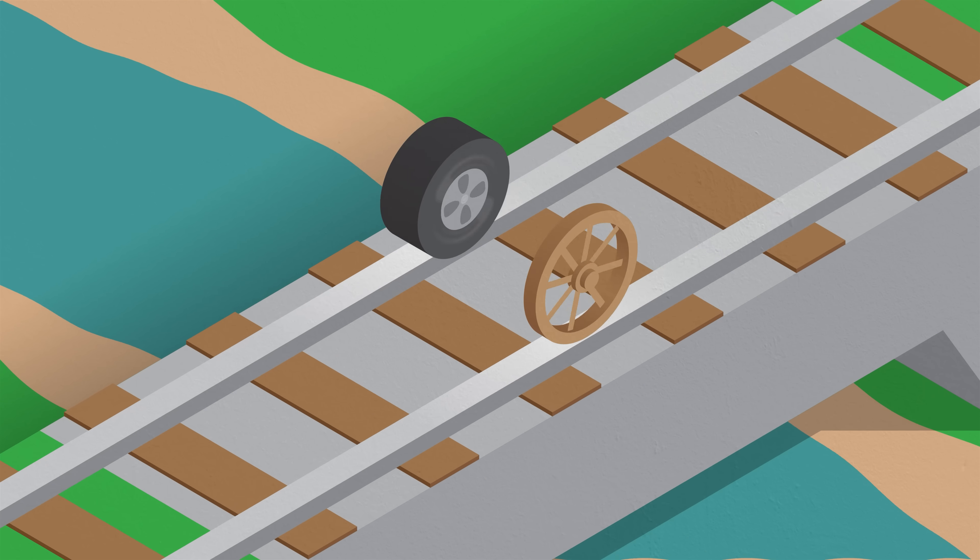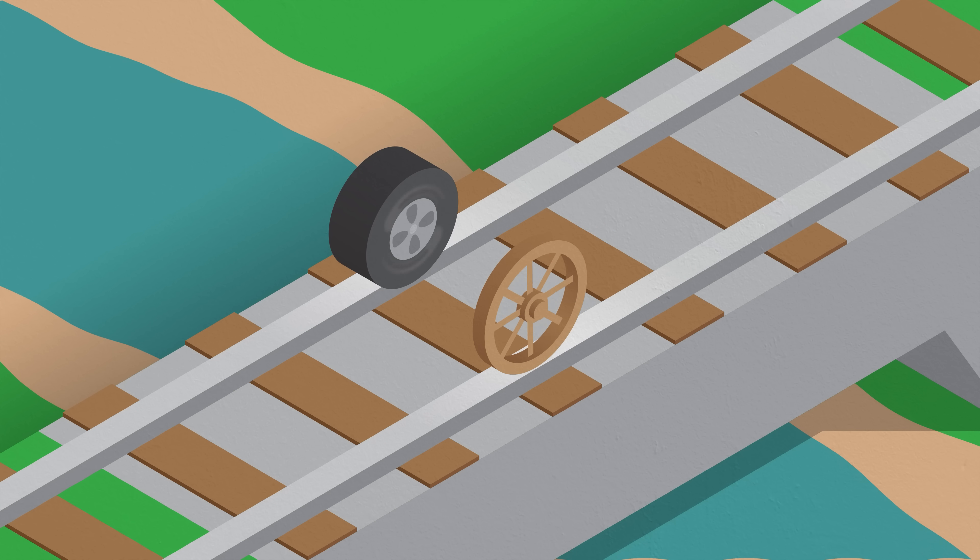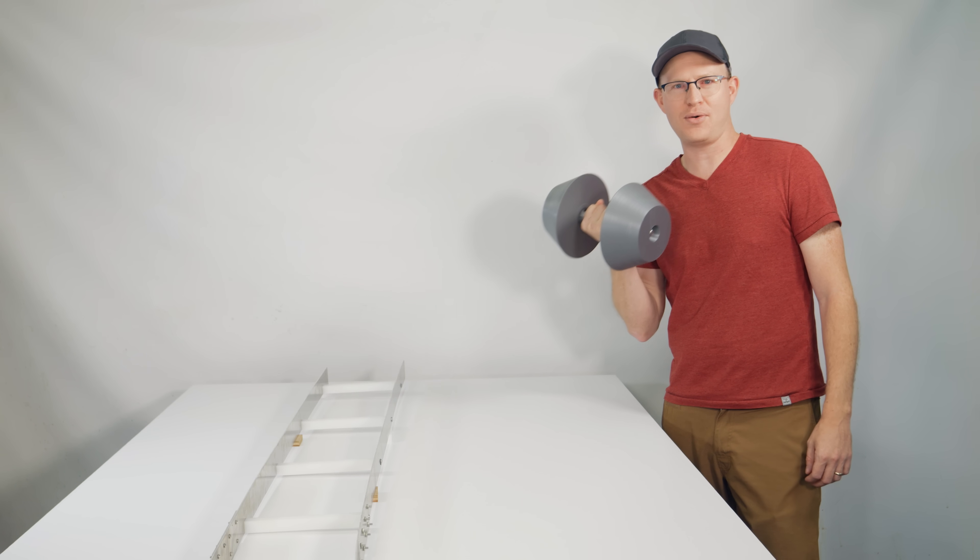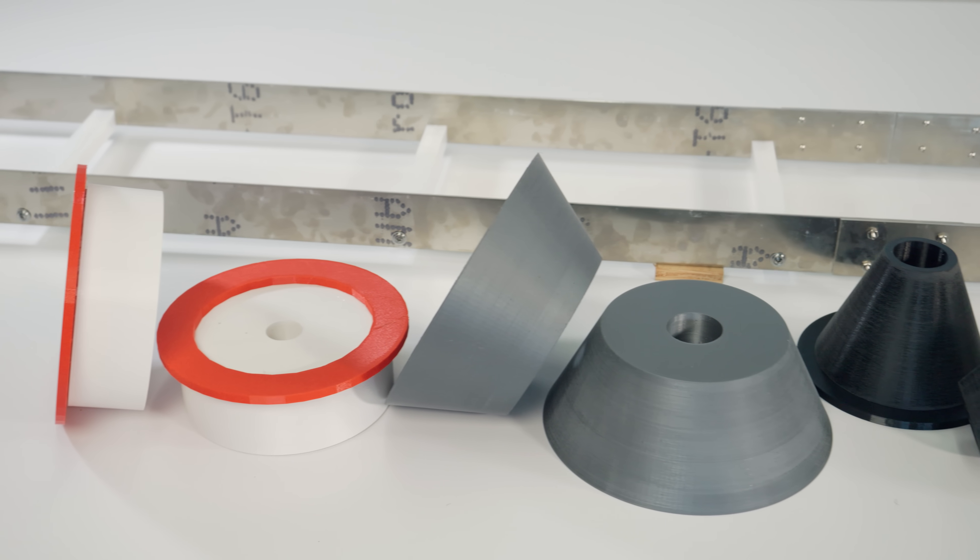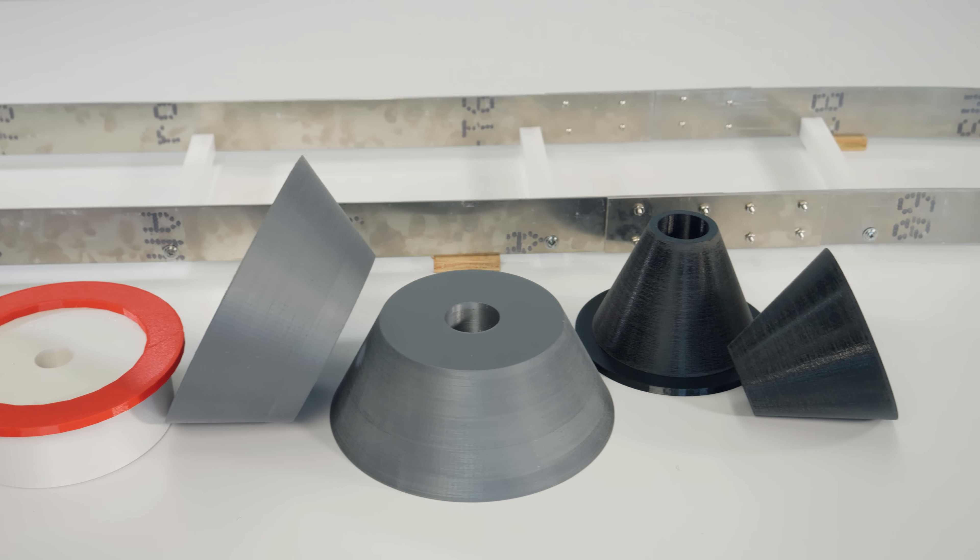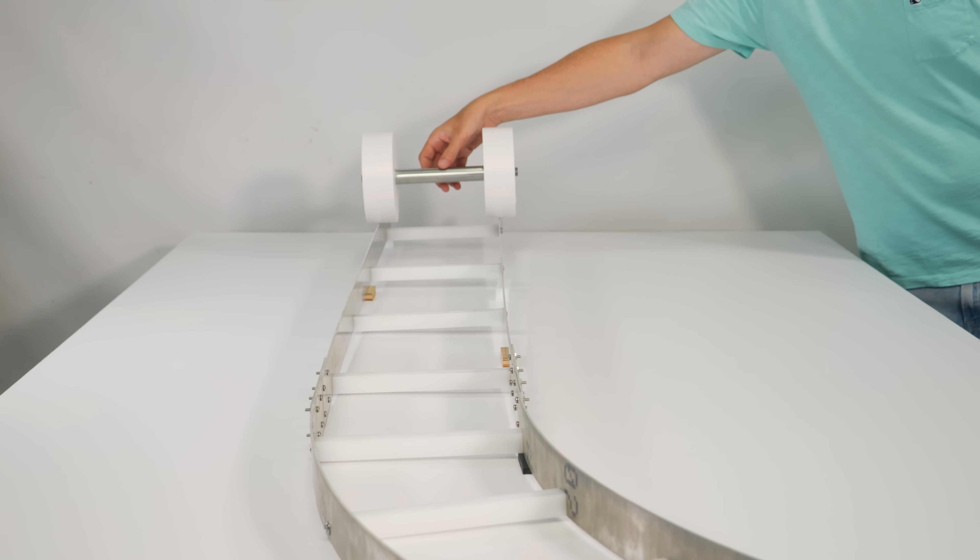But wooden or rubber tires have a lot of rolling resistance because they deform under load, and that resistance adds up with each individual train car. So we use steel for the wheels too. I built this model to show exactly how this works. My wheels are plastic and the rails are aluminum, but I think you'll still get the point. Steel wheels on steel rails are just so much more efficient than...